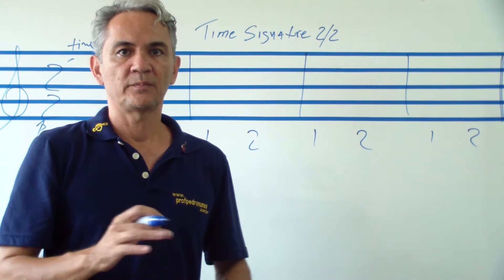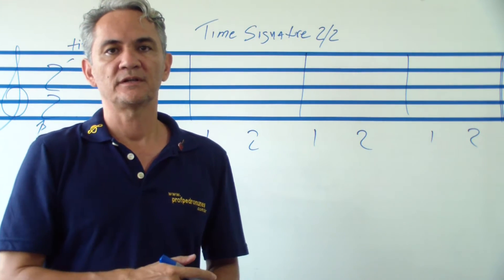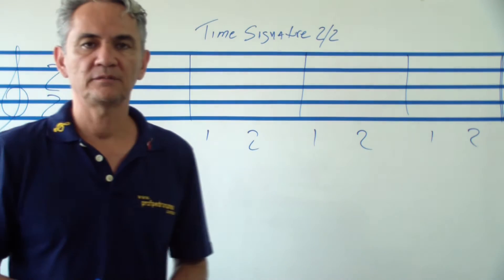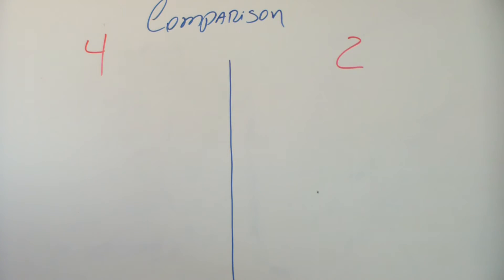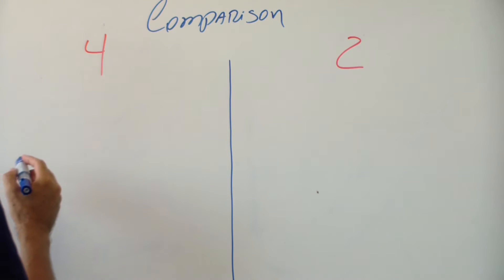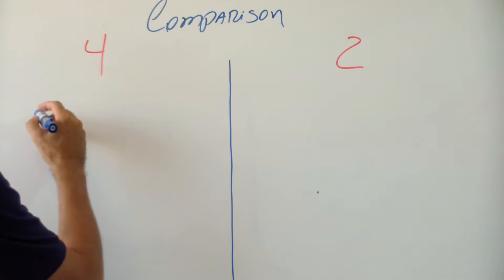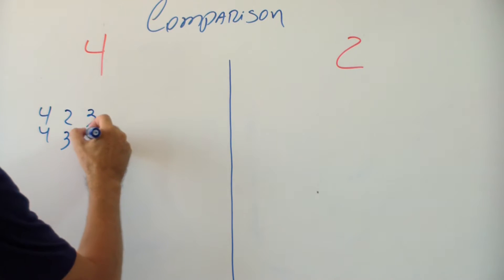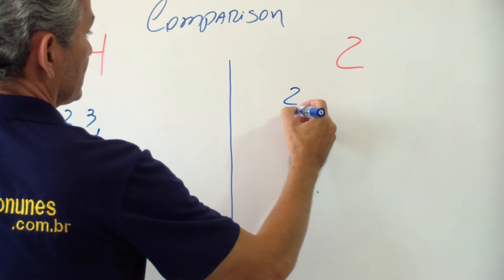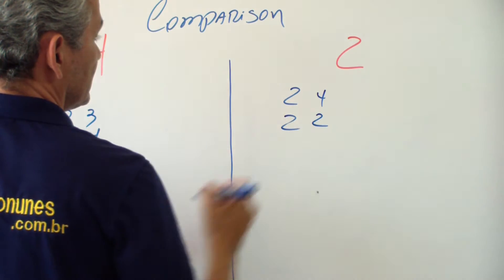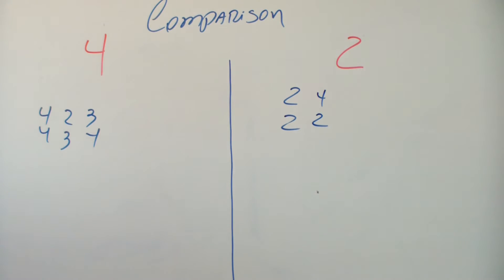Let's see the comparison between bottom number 4 and bottom number 2. For example, you can have 4/4, 2/4, and 3/4 with bottom number 4. And you can have, for example, 4/2 with bottom number 2.